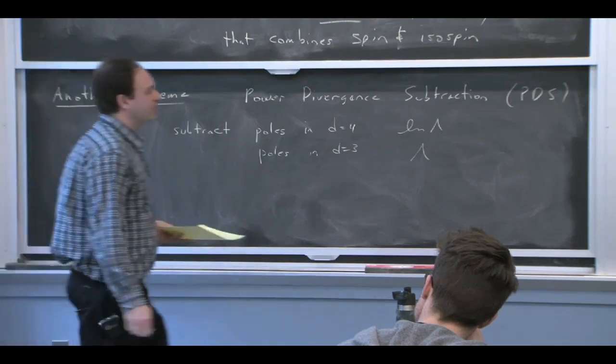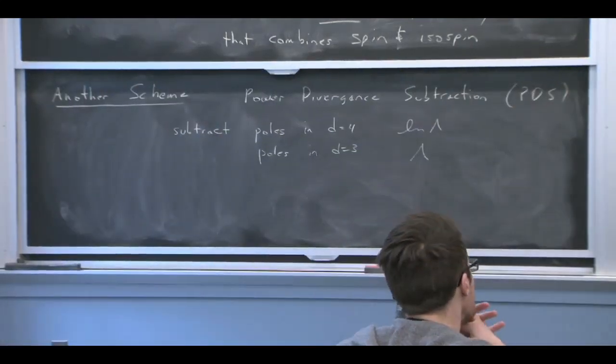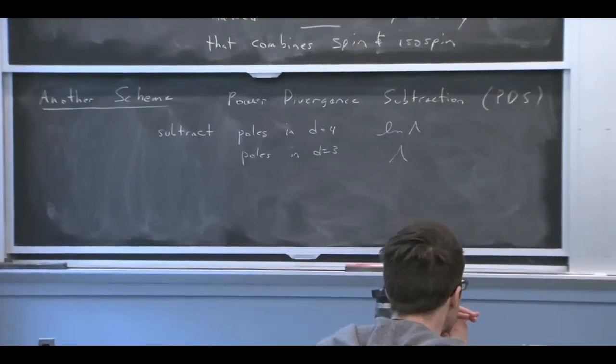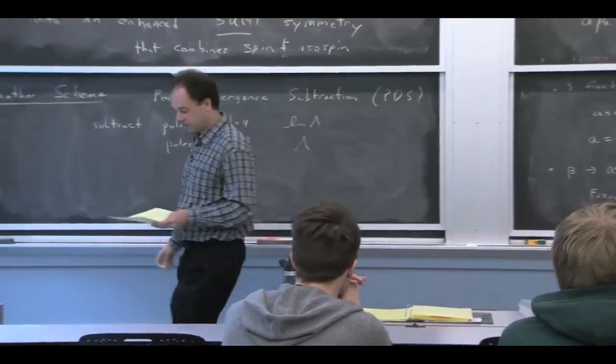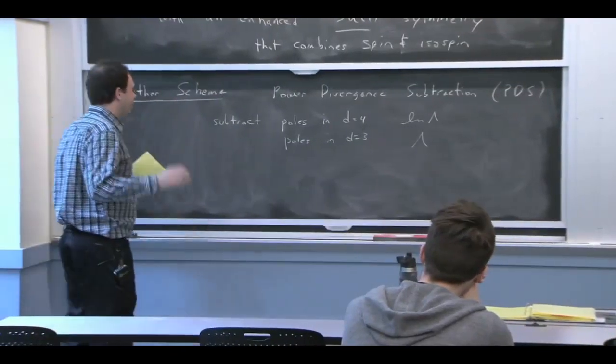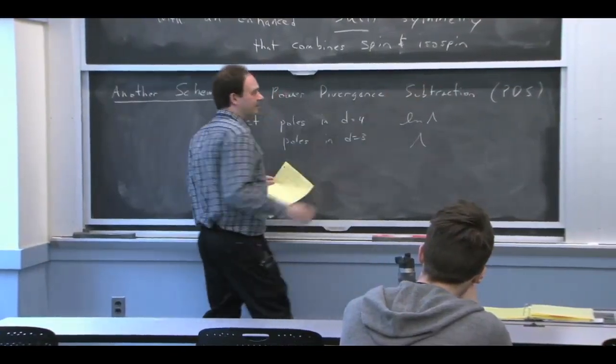That's what sort of allowed you to jump from this fixed point to this one. The renormalization group, including the power law divergence, allows you to even flow between those points. Usually we think that power law divergences aren't doing anything. Here's an example where they are.